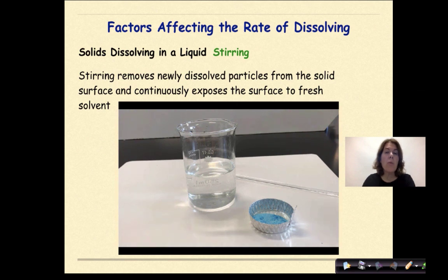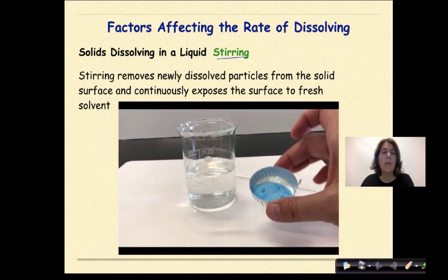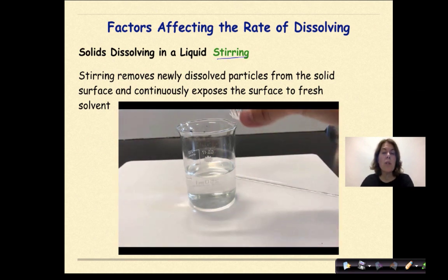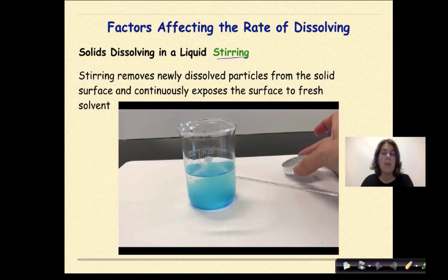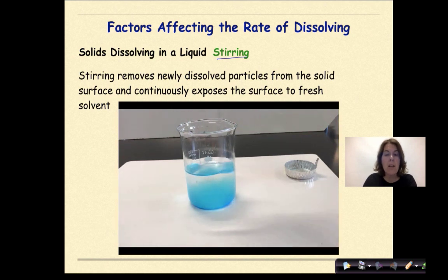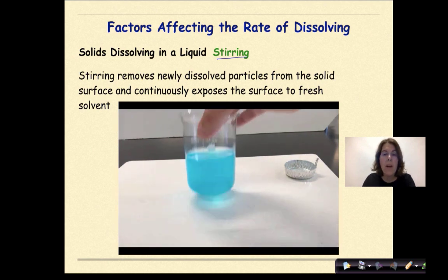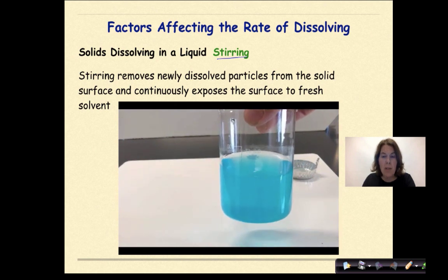Solids dissolving in a liquid with a focus on stirring. Stirring removes newly dissolved particles from the solid surface and continuously exposes the surface to fresh solvent. So I just added some copper 2 sulfate to water. And I'm stirring it rapidly, like super rapidly, crazy rapidly. And as I'm stirring it, I'm exposing new surface area from those particles. And over time, if I stirred enough, it will be completely dissolved, as you can see here.